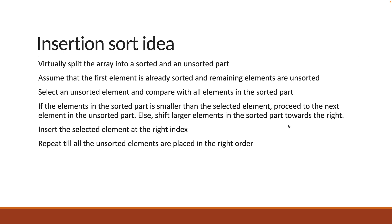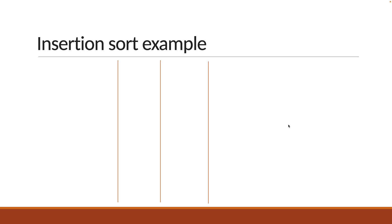These points might be difficult to understand, so let me help you visualize with an example. Consider the array from our example: minus six, twenty, eight, minus two, and four. Here is how insertion sort works.